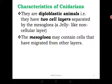One, they are diploblastic animals, meaning they have two germ layers: the ectoderm and the endoderm. But in between the two there is another layer called the mesoglea. This layer does not have any cells but has a jelly-like structure. The mesoglea may contain cells that have migrated from other layers, but it doesn't have its own distinct cells.